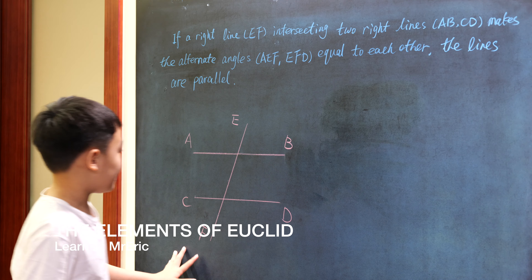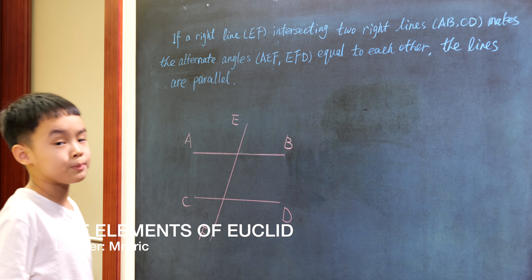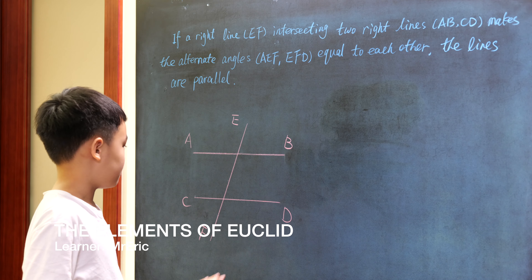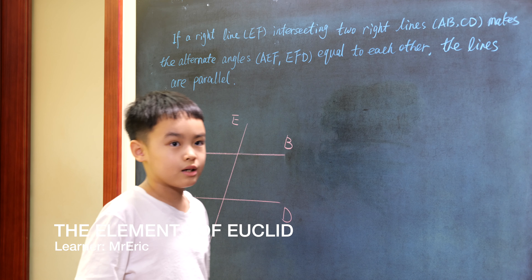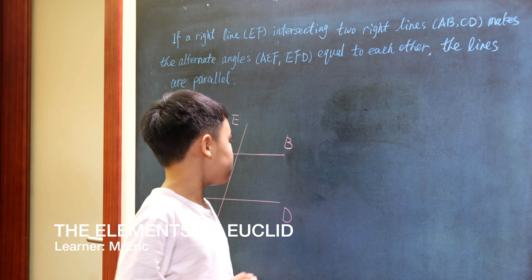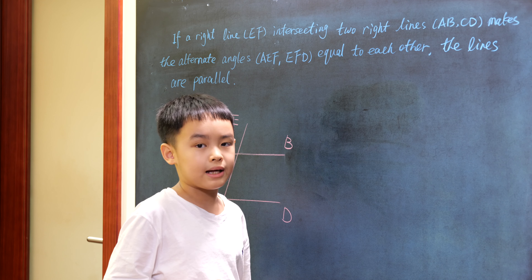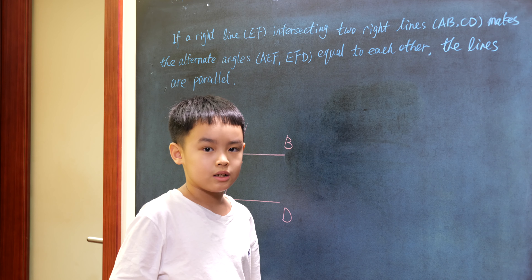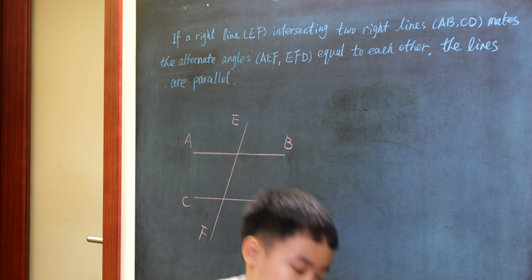If line AB and CD are not parallel, they must meet. If possible, produce those two lines until they meet at point G.